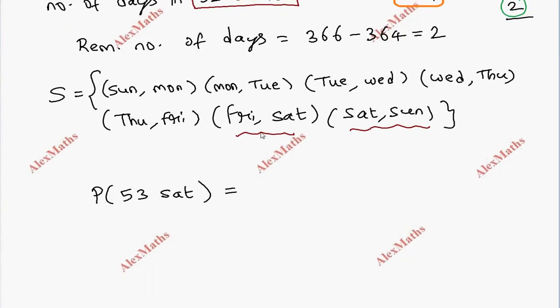The remaining two days will be in the combinations. There are seven options. 1, 2, 3, 4, 5, 6, 7. So, probability is 2 by 7. Saturday appearing in any of those two day combinations. This is the answer.